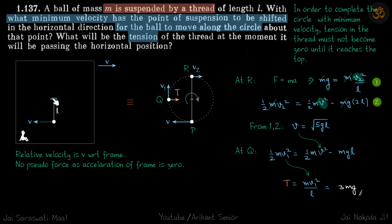Here the point of suspension is shifting in the horizontal direction with velocity V. So the point of suspension is part of the reference frame itself. Let's say the reference frame itself is moving with velocity V. If you observe the motion with respect to the reference frame, this ball will have an initial velocity of V in the opposite direction. This is the relative velocity of the ball with respect to the frame, and with respect to the frame there is no pseudo force as the acceleration of the frame itself is zero.